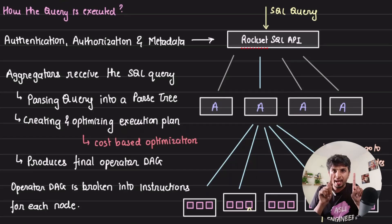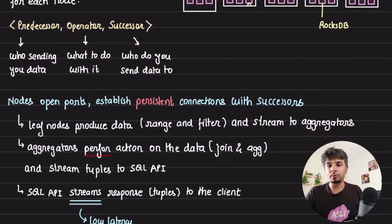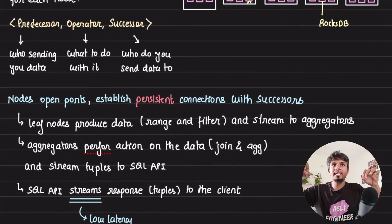Here's some very interesting details. The aggregator sends out this instruction - this final operator DAG - to all the leaf nodes. For each node there is a clear instruction on from whom it would get the data, what it needs to do, and where it needs to send the data. When each node gets this, the way the execution starts is...